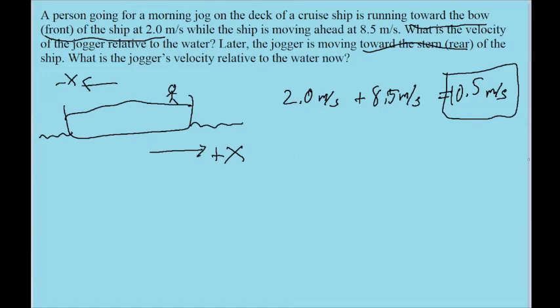So if that's the case, then if we just add these two velocities together, as we would do, then now it's negative 2.0 meters per second, because the jogger is moving in the negative direction.